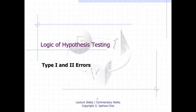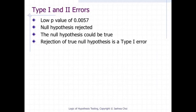Type 1 and 2 Errors. In the Physician's Reactions case study, the probability value associated with the significance test is 0.0057.